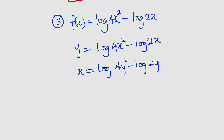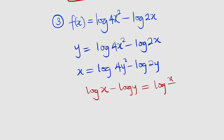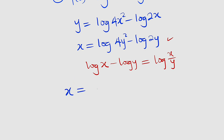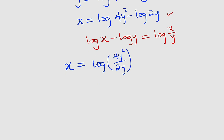Remember from one of the laws of logarithm: if you have log of x minus log of y, and if they have a common base, you can always assign them a single log — this is log of x divided by y. So we apply the same thing here. Therefore, x will be equal to log of 4y squared divided by 2y. And 4y squared divided by 2y simplifies to 2y, because 2 goes into 4 two times and y goes into y squared y times. So x is equal to log of 2y.